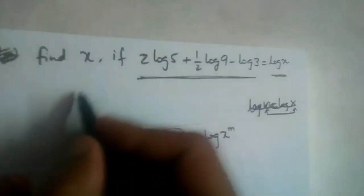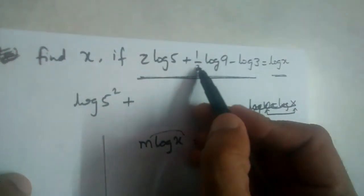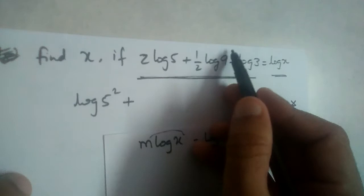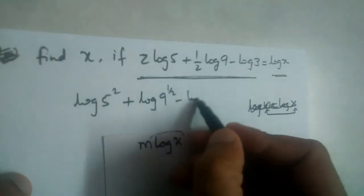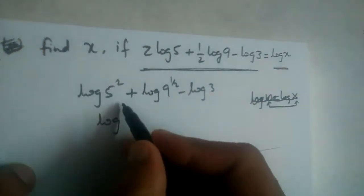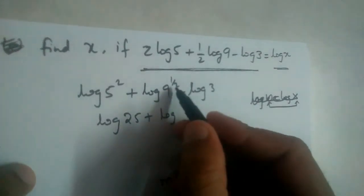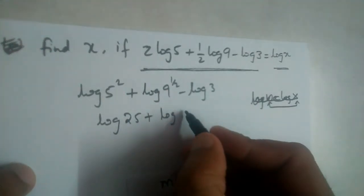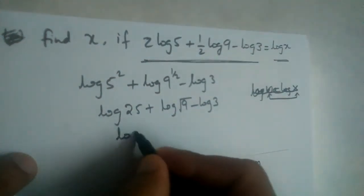All right, so this is log 5 square first one, plus this is half right - half goes and it will become 9 power 1/2 minus log 3. Log 5 square is 25, plus log 9 power 1/2. 9 power 1/2 is root 9, which is 3, minus log 3.